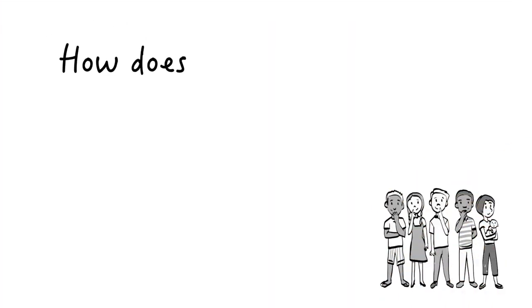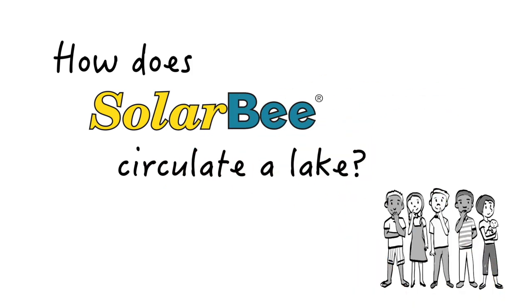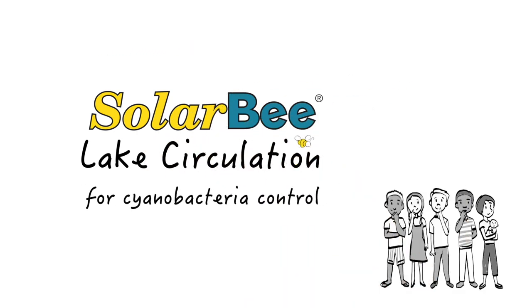Many people ask us, how does a Solar Bee circulate a lake? Hopefully this video will help you understand a little bit better the flow patterns created by Solar Bee circulation equipment for cyanobacteria control.